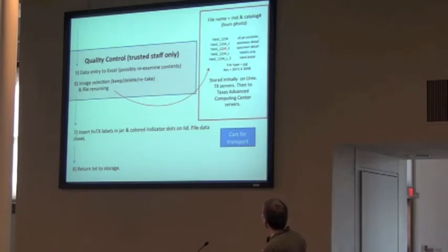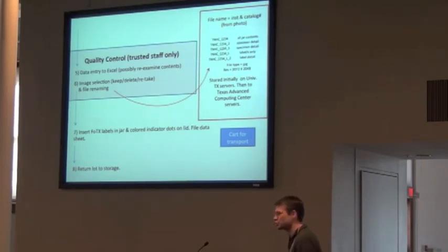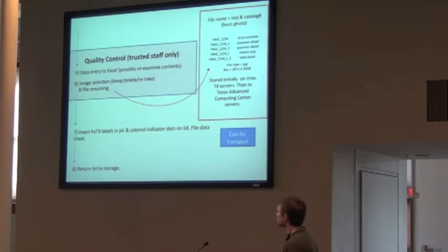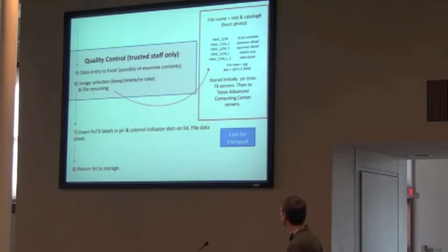If it had an L it would be a label, and then there are sequential suffixes for multiple label details as well. File types are JPEG, and I feel like people are going to say you should use TIF to publish it. Resolution is 3072 by 2048, and they're initially stored on our University of Texas server, and then they go through our specified database to go up on our Texas Advanced Computing Server.